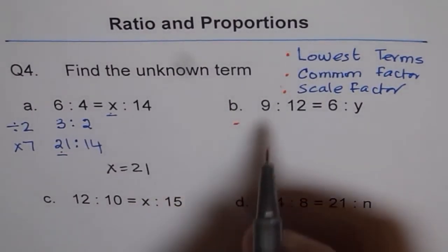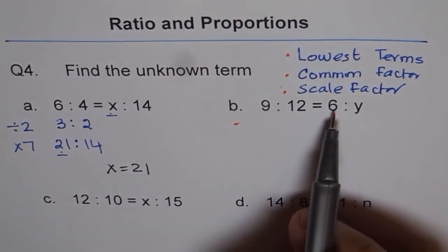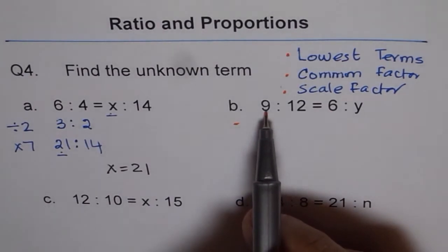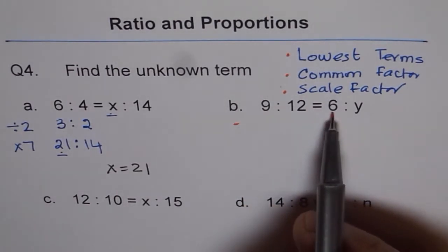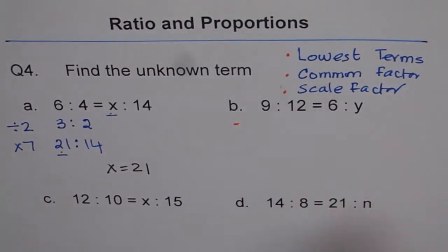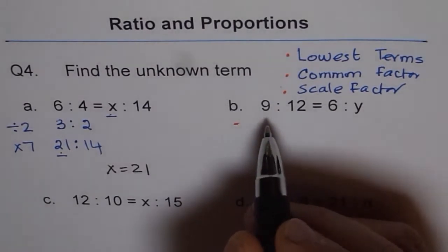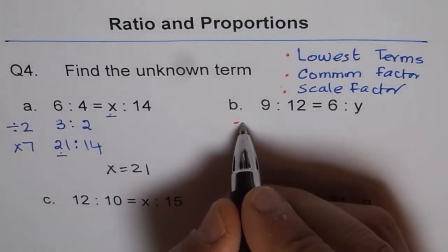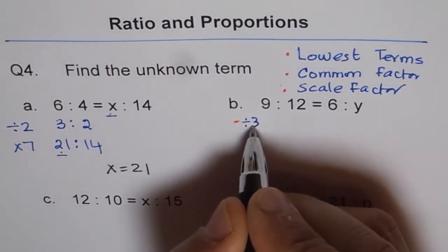Now here, first thing, first step. 9. Can you get directly from 9 to 6? No, you can't. Even if you divide 9 by 2, you get 4.5. You don't get 6. So the best thing is to find a common factor between 9 and 12. Common factor between 9 and 12 is 3. So we can divide both by 3.